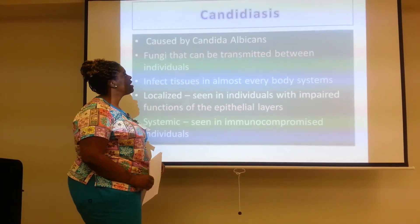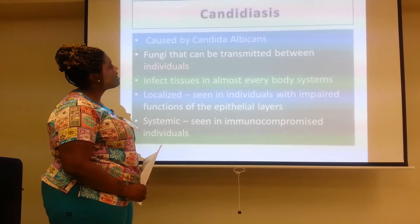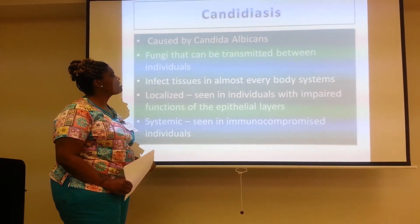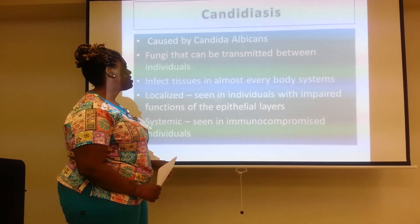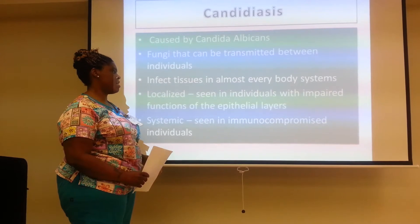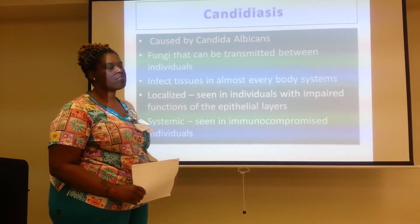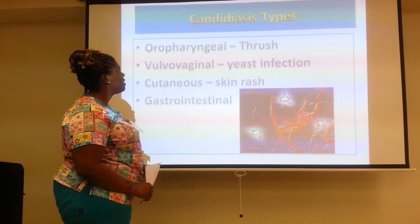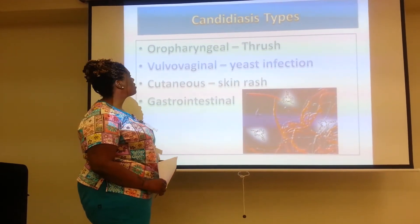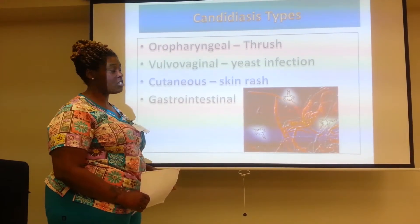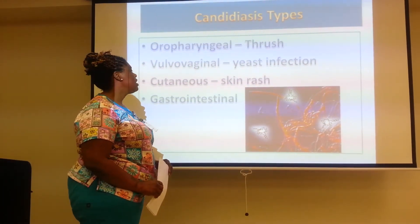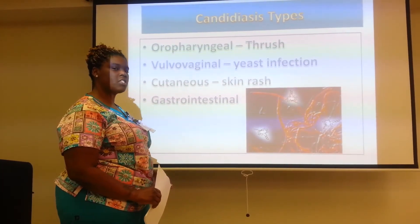Our next disease is candidiasis. It is caused by Candida albicans, a fungus that can be transmitted between individuals. It affects tissues in almost every body system. It can be localized — seen in individuals with impaired functions of the epithelial layers — or systemic, seen in immunocompromised individuals such as people with AIDS. There are several types of candidiasis; we will cover four: oropharyngeal (thrush), vulvovaginal (yeast infection), cutaneous (skin rash), and gastrointestinal (infection of the stomach and intestines).